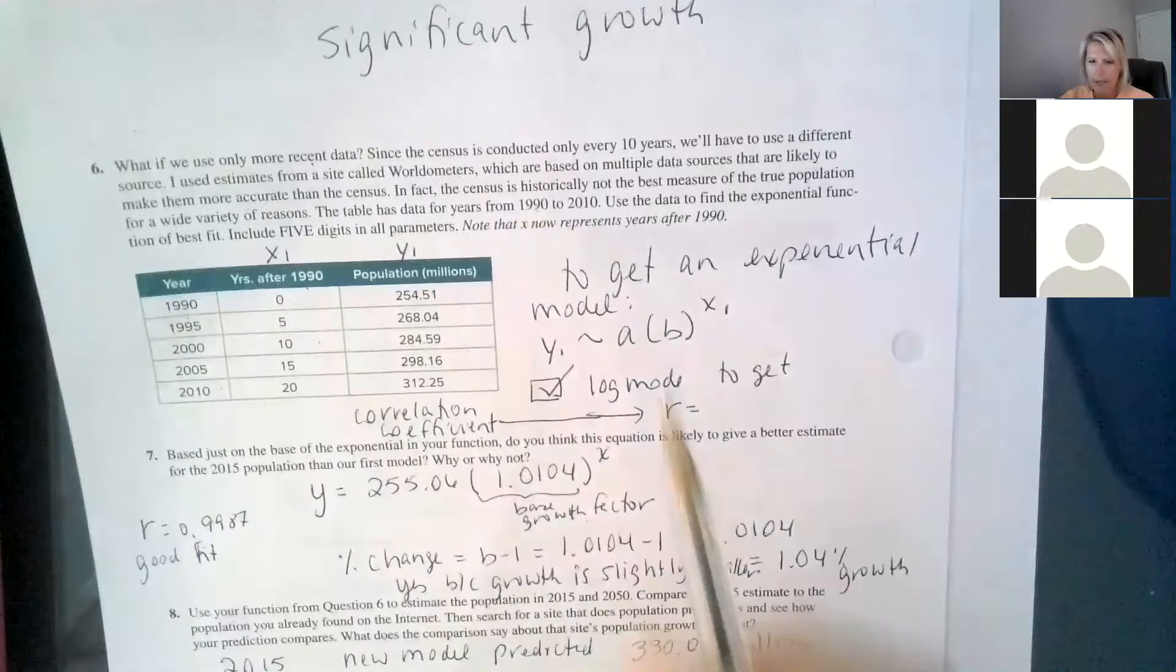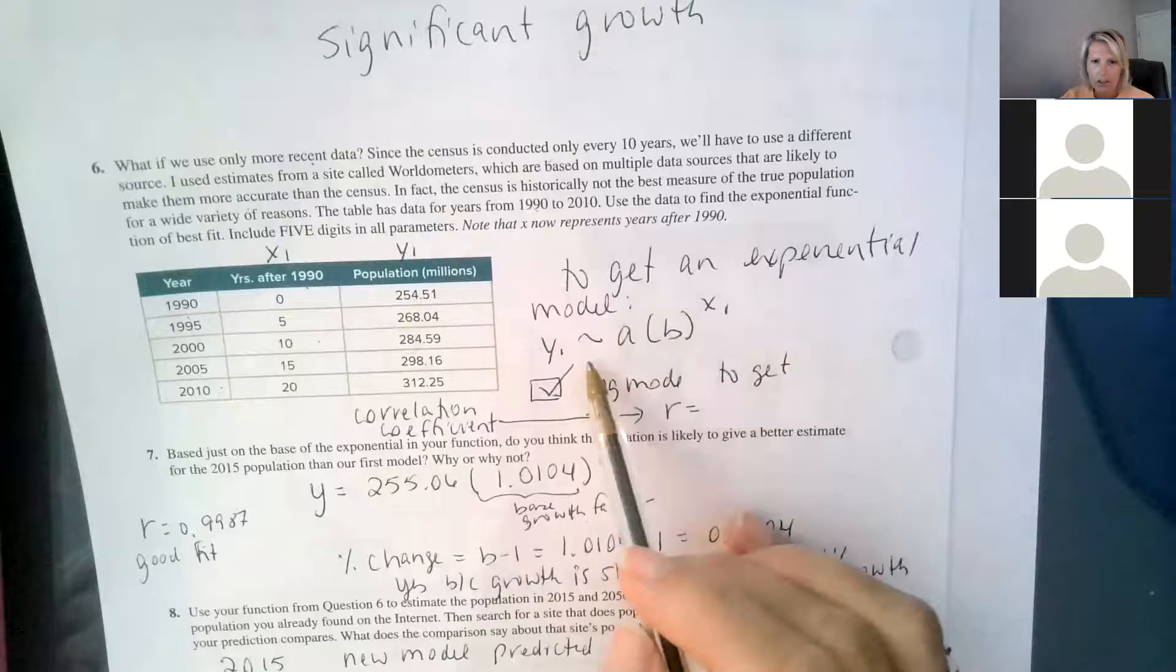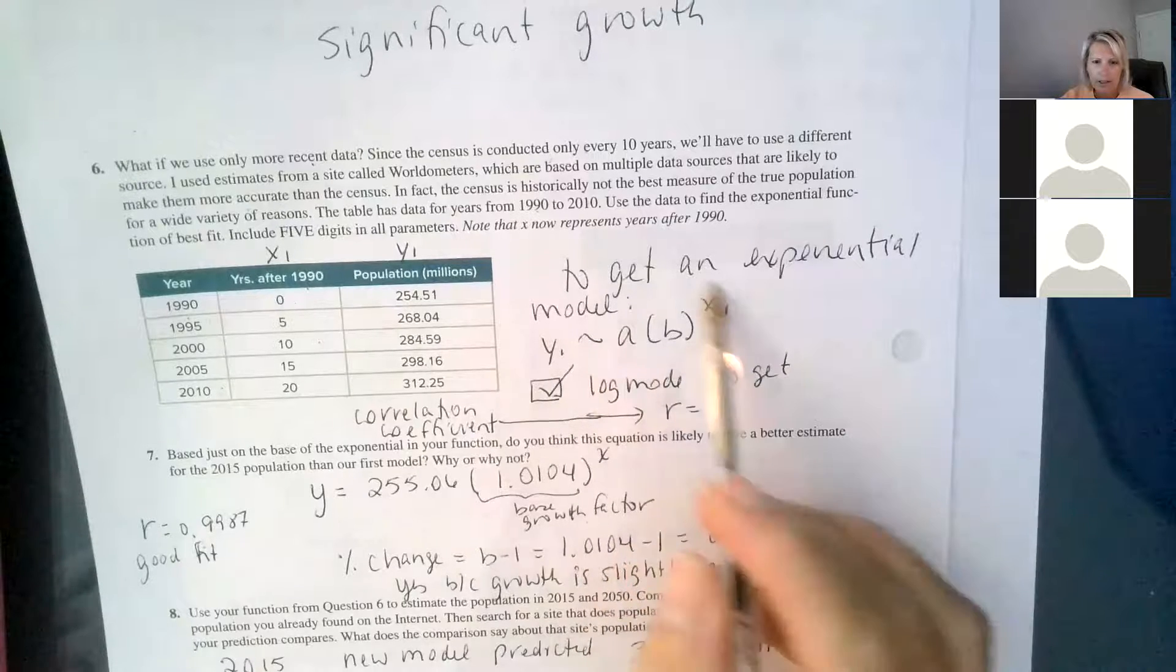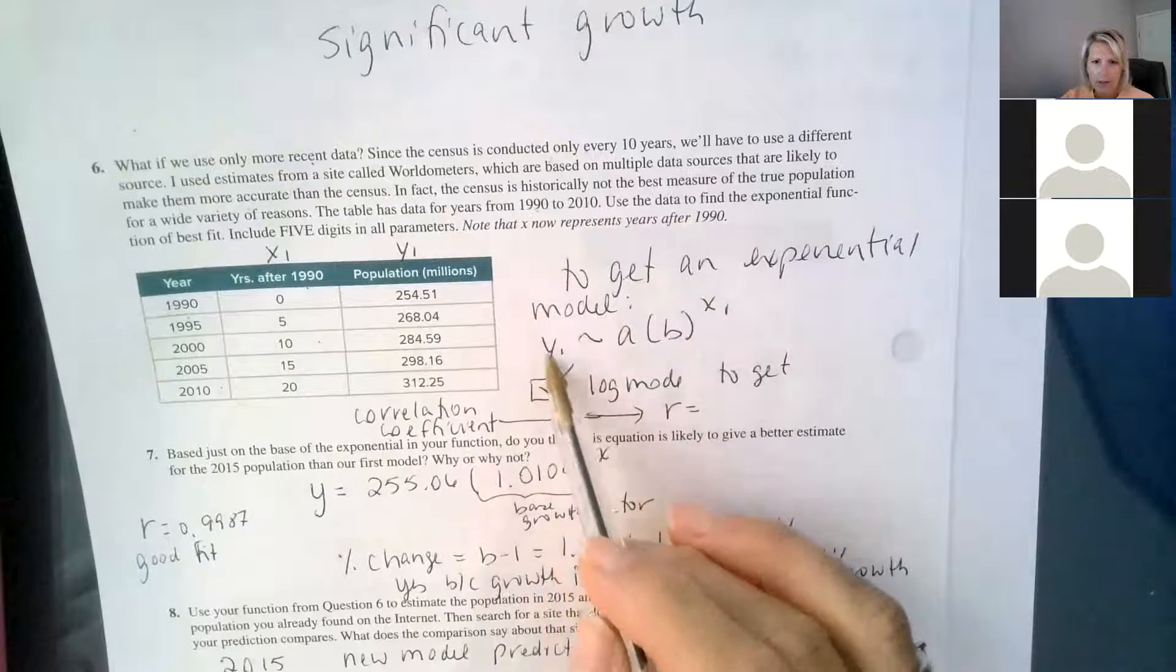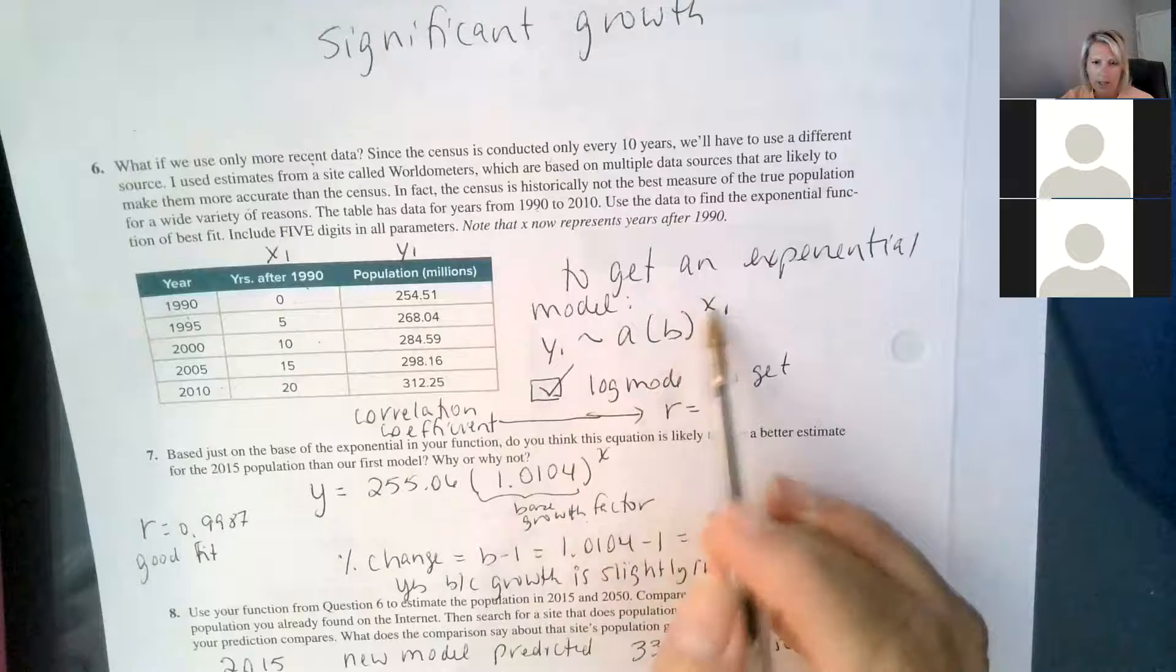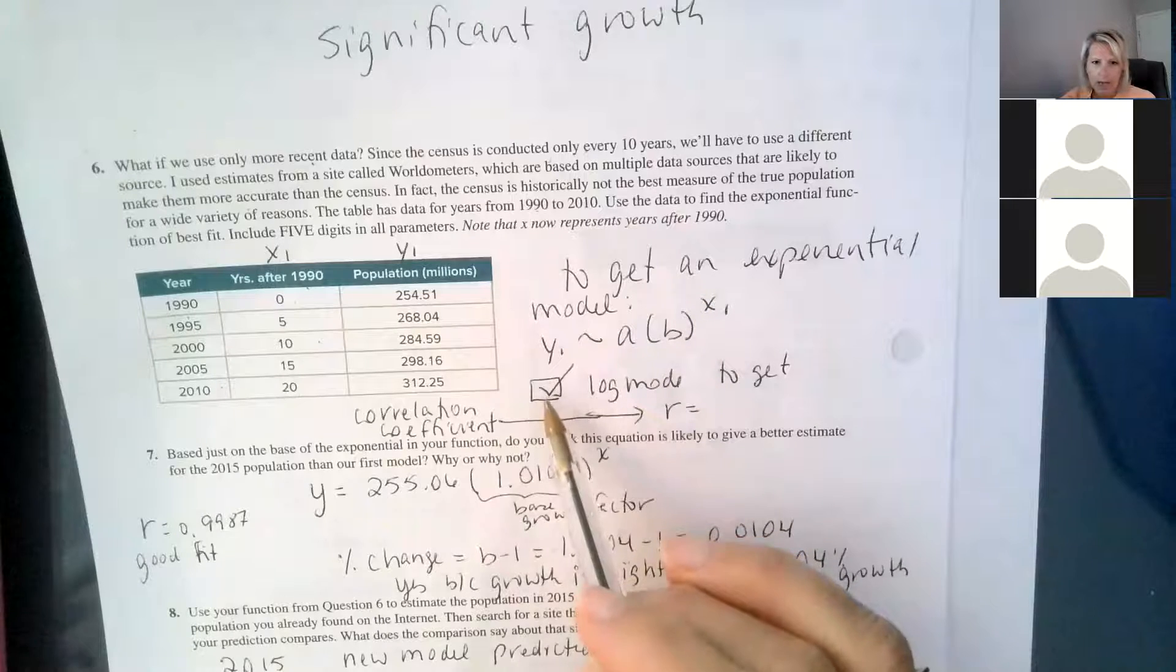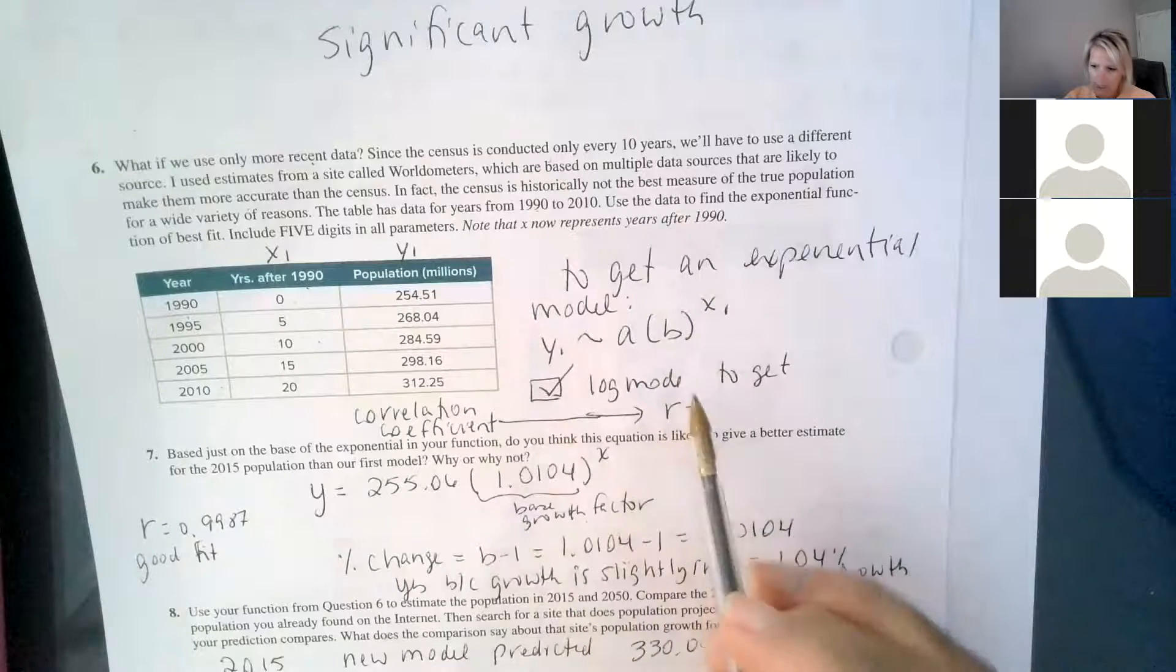The biggest takeaway here is when you're working with exponential data and you want to do a model, you have to use this modeling method: y1 tilde a times b to the x1, and make sure you click on the log mode box for your r. That's important.